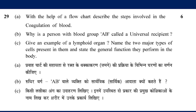For AB blood group, you can use R, A, and O — so we call it the universal recipient. Give an example of a lymphoid organ, name the two major types of cells present in it, and state the general function they perform in the body.